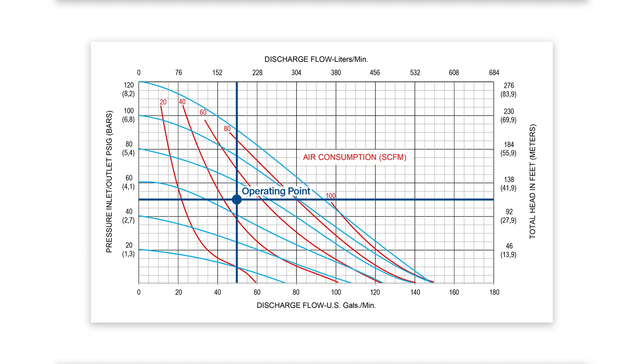If we utilize the same operating point from the performance example, pumping 50 gallons per minute at 115 feet of head, how much air will the AODD pump consume?